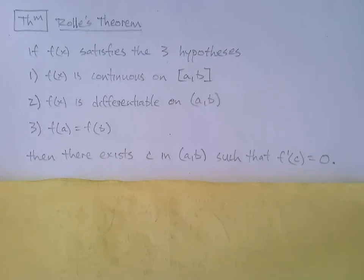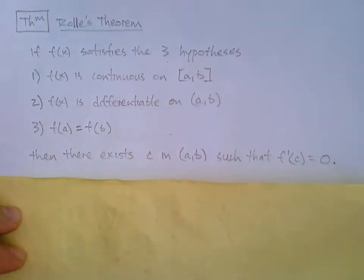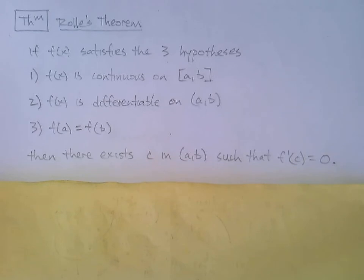And finally, number three, that f(a) is equal to f(b). So in other words, the y values of the endpoints are the same. If all three of those things are true, then we can conclude there exists c in (a,b) such that f'(c) equals zero.